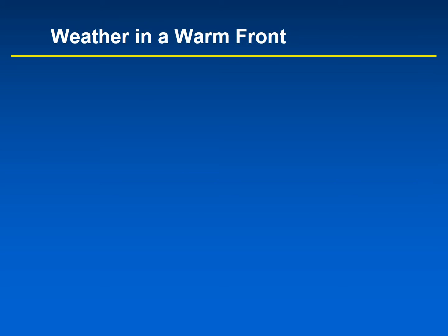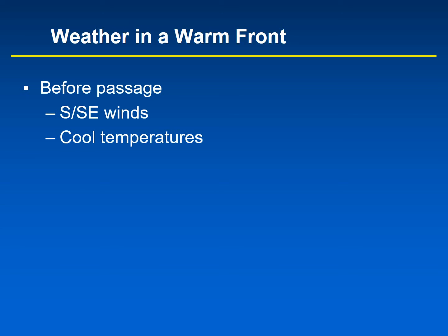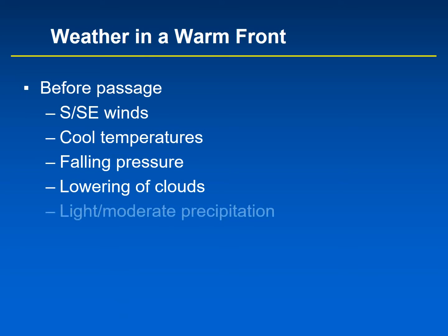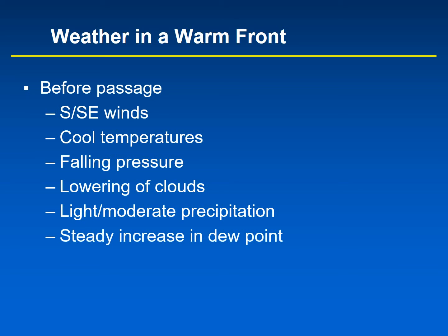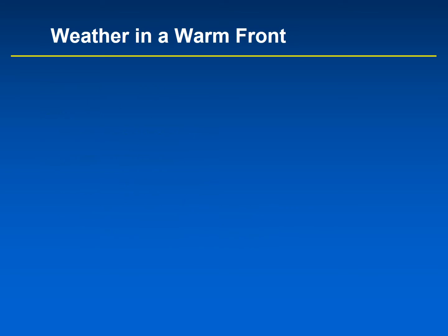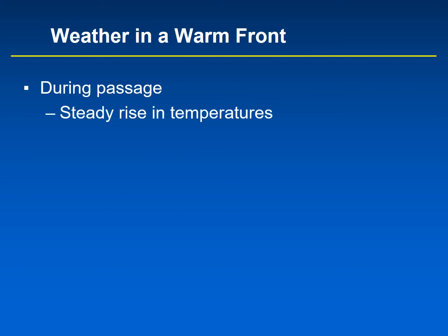What's the weather like with a warm front? Before it passes, winds are from the south or southeast and temperatures are cool. Pressure falls and clouds lower. There can be light to moderate precipitation ahead of a warm front, and as it approaches, dew point increases steadily. The temperatures before the passage of a warm front are cool, but not as cold as after a cold front passage. As the warm front passes, temperatures rise steadily — they don't rise as quickly during a warm front passage as temperatures drop during a cold front passage. Winds are variable — cold fronts have gusty shifting winds, while warm fronts have winds that shift but are more variable and light during passage.